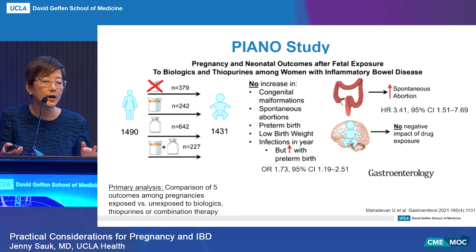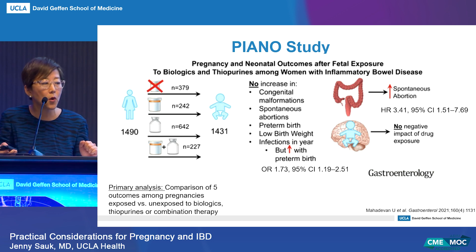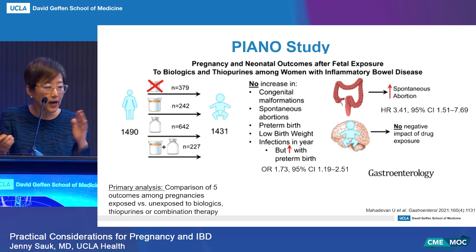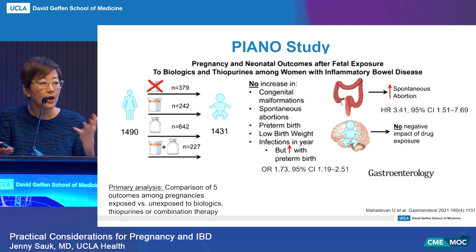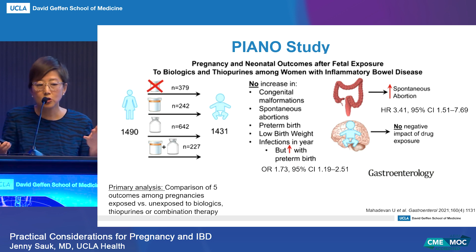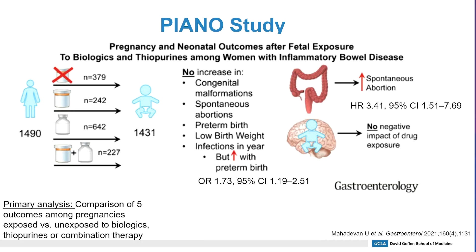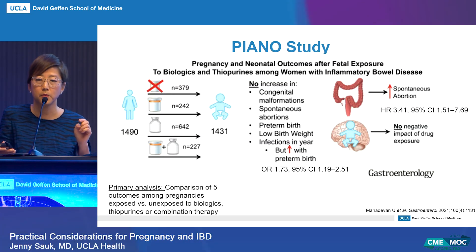The PIANO study — a prospective multicenter observational cohort published in Gastroenterology in 2021 — looked at five outcomes among pregnancies exposed or unexposed to biologics, thiopurines, or combination therapy. It analyzed 1,490 pregnancies and 1,431 live births: 379 patients were not on treatment, 242 on thiopurines, 642 on biologics, and 227 on combination therapy. There was no increase in congenital malformations, spontaneous abortions, preterm birth, or low birth weight with these treatments. With increased disease activity, however, there were adverse events including increased risk of spontaneous abortion. Developmental milestone assessments showed no negative impact of drug exposure, though infection risk did increase with preterm birth.